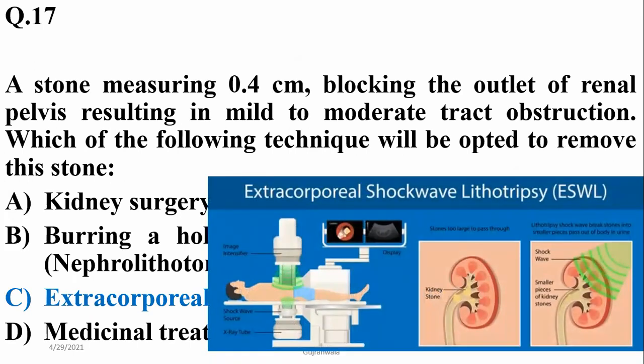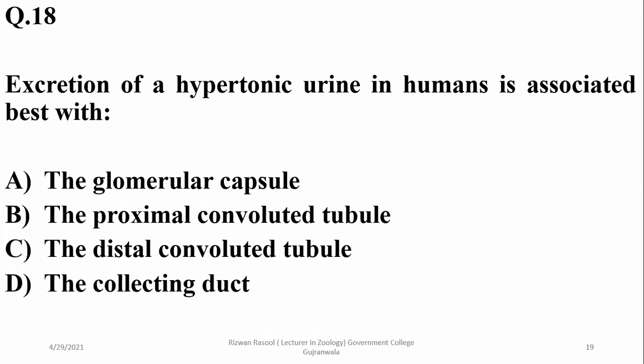The instrument shown is related to lithotripsy. Excretion of hypertonic urine in humans is associated best with the collecting duct as well as the loop of Henle, but the collecting duct seems a better option, so delta.